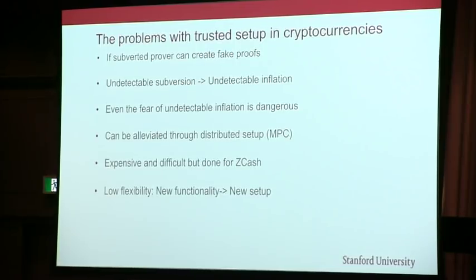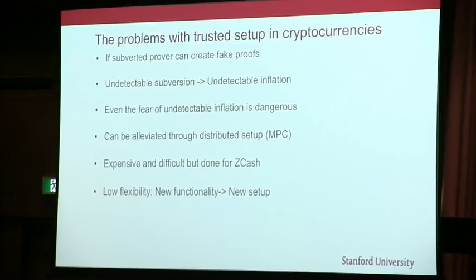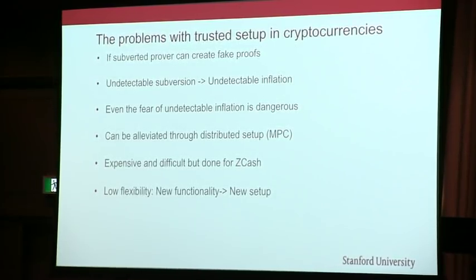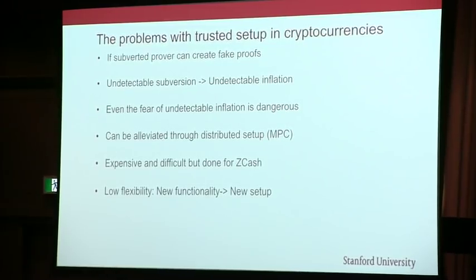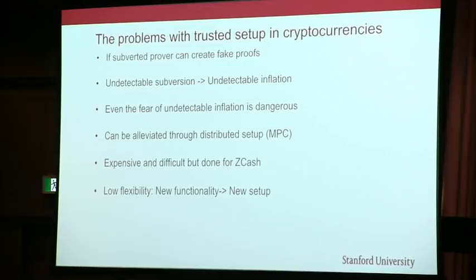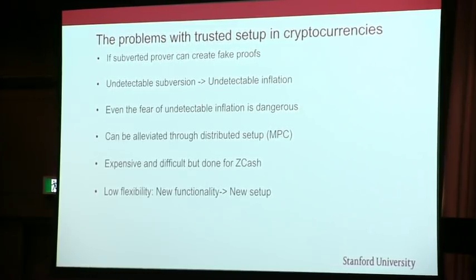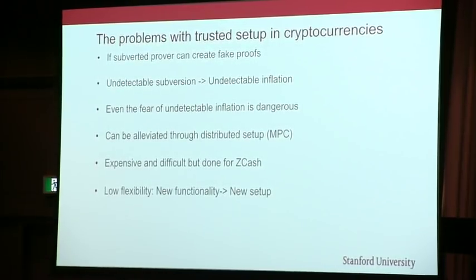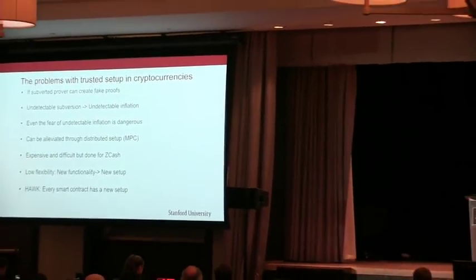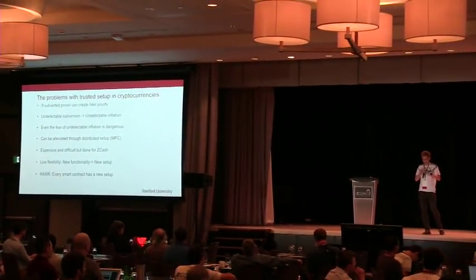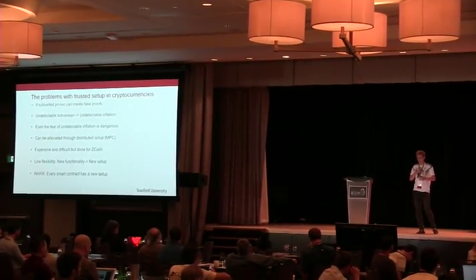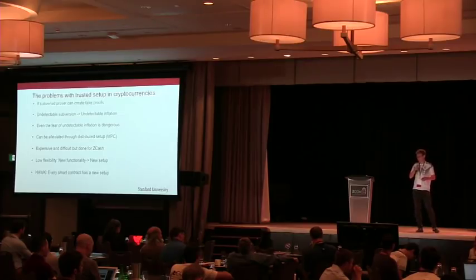The problem with trusted setup, though, is not that we can't do it — it's that it's very inflexible. Every time we want to add new functionality, change the circuit, or do an update, we have to do a new setup. For example, if you want smart contract or script-like functionality where every transaction is slightly different, you have to do a different setup for every circuit. There's been an academic proposal called HAWK which does a lot more, but there you have to do a different setup for every smart contract, which doesn't seem very reasonable.